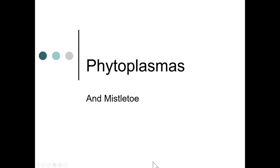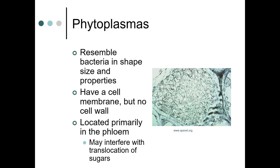This week we're talking about phytoplasma and mistletoe. Phytoplasmas resemble bacteria in shape, size, and properties — they have a cell membrane but no cell wall. They're located primarily in the phloem, which may interfere with the translocation of sugars, and this can inhibit leaf growth and flowers.